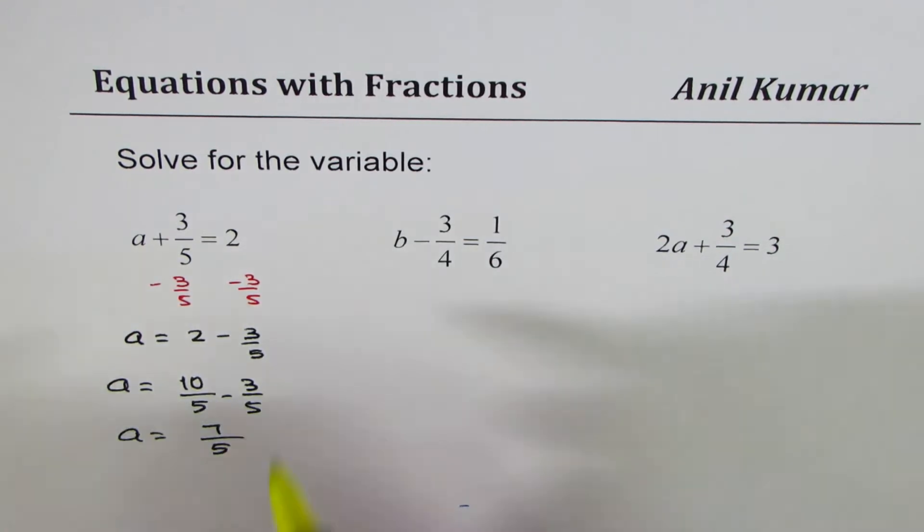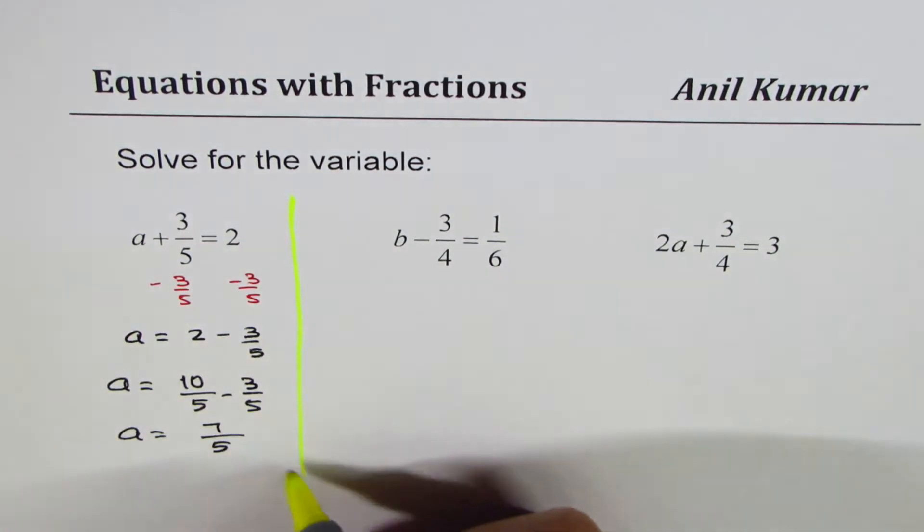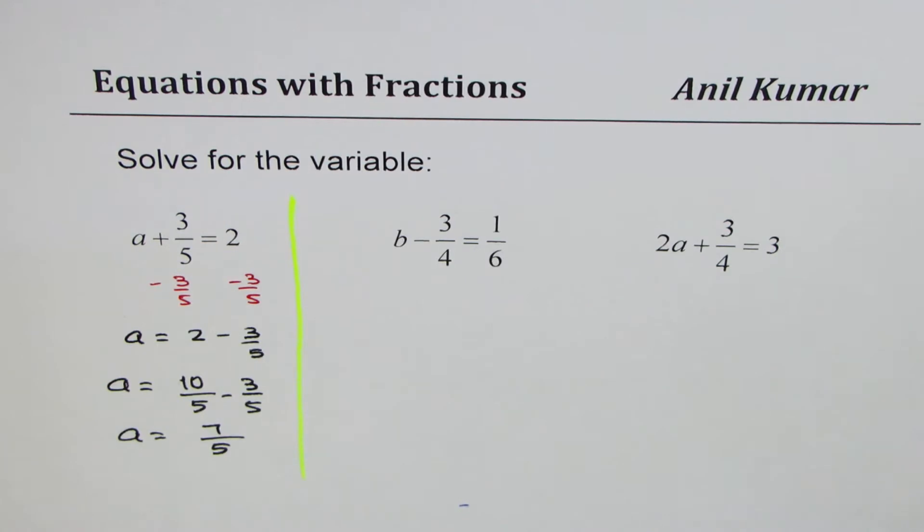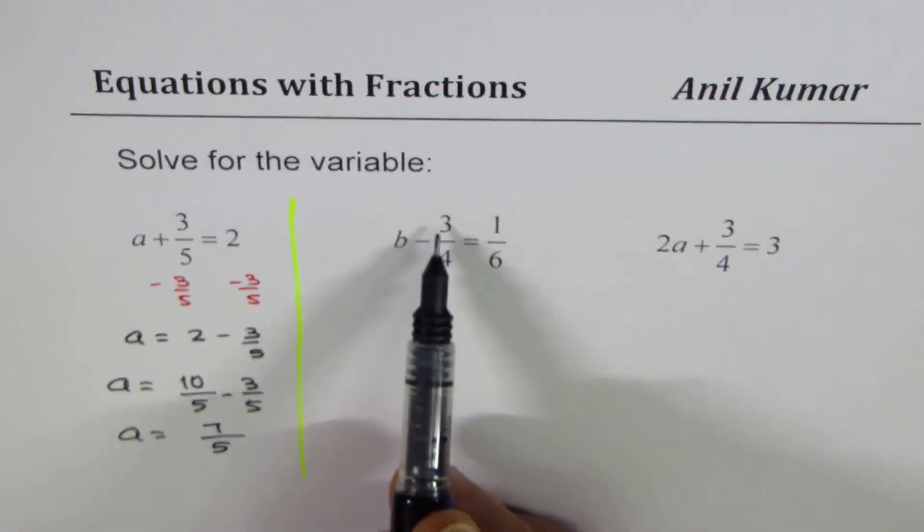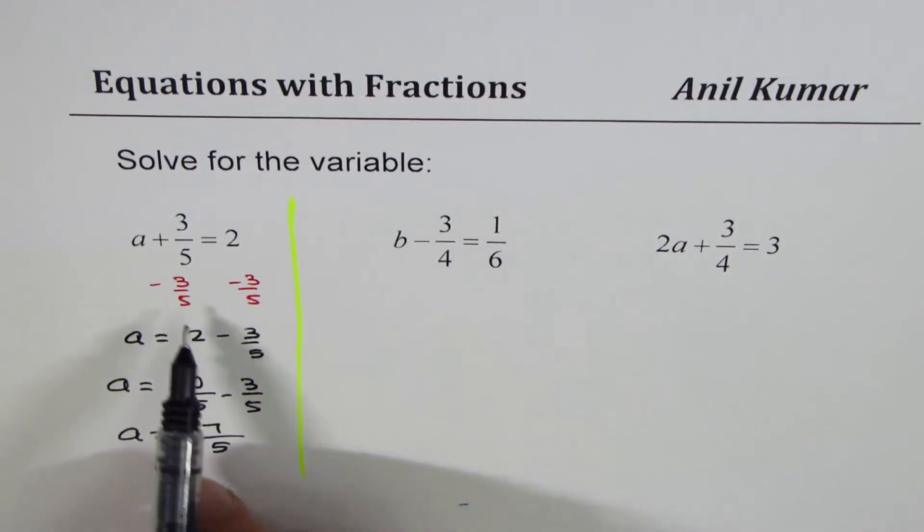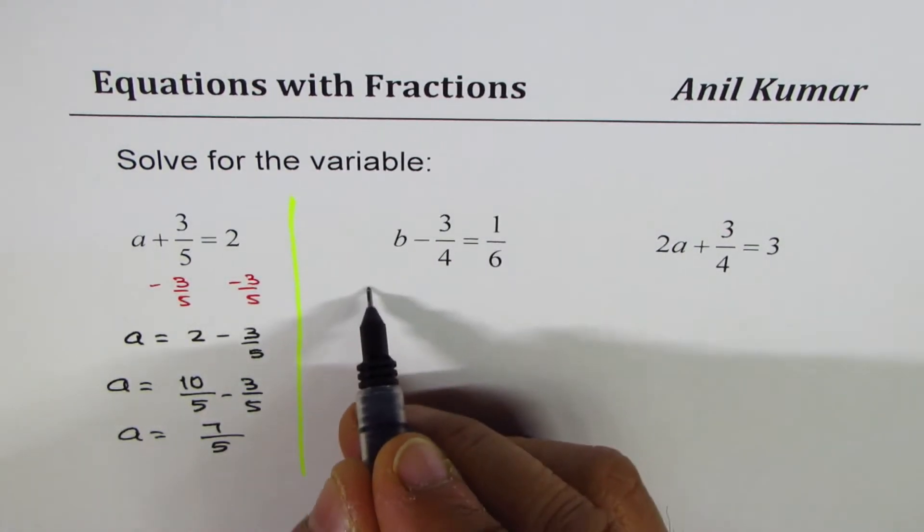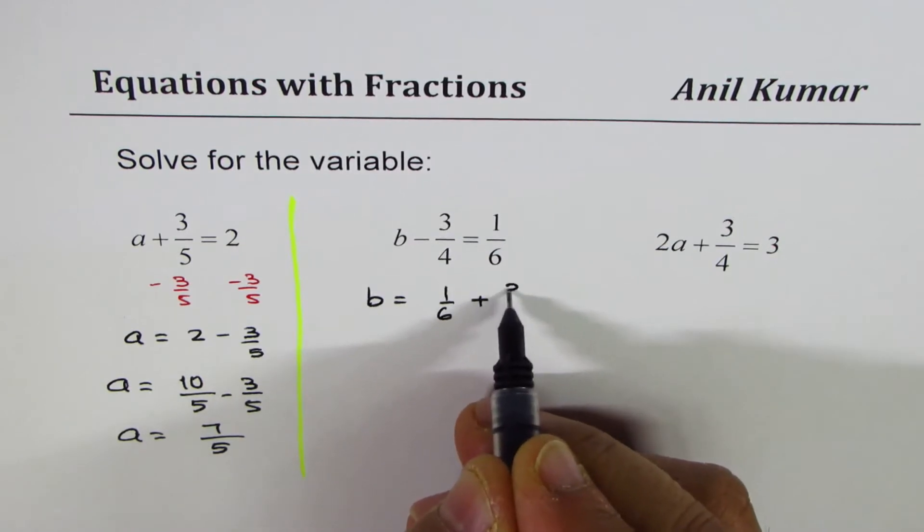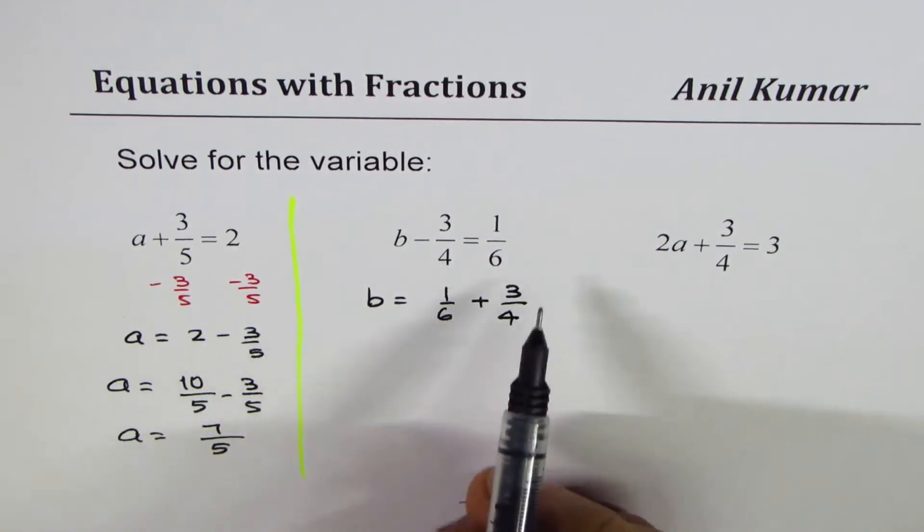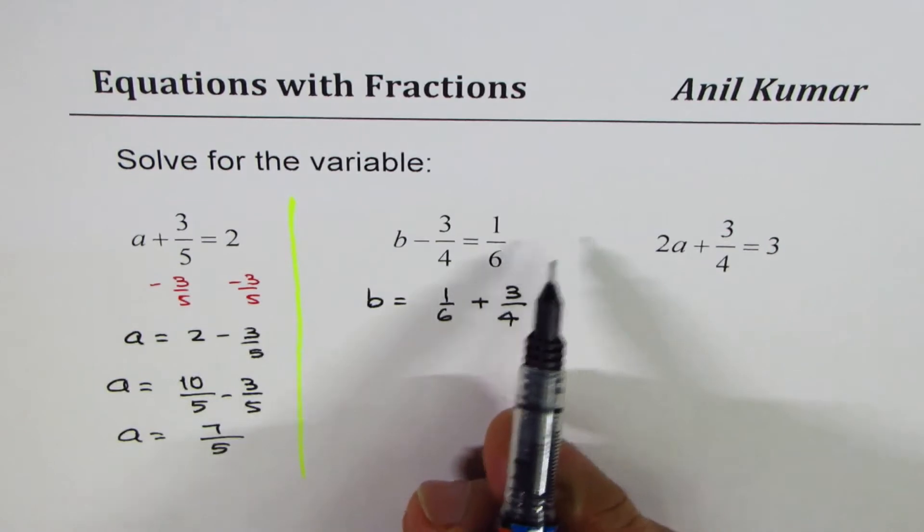Let's do the second equation. There could be a variation on this. However, these are good enough steps to perform. Here, we'll actually add 3 over 4 on both sides. So I need not show this step. Now, you understand, I could rearrange and write this as b equals 1 over 6 plus 3 over 4. I'm getting this because I'm adding 3 over 4 on both sides.